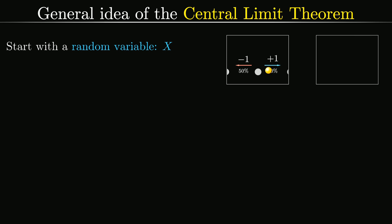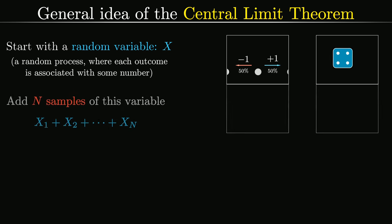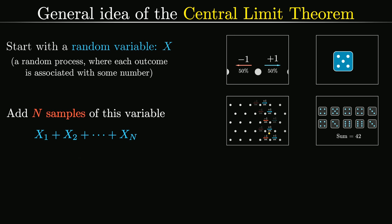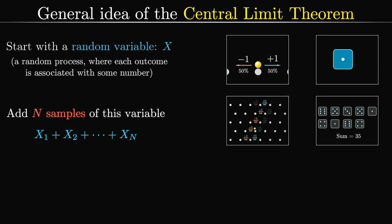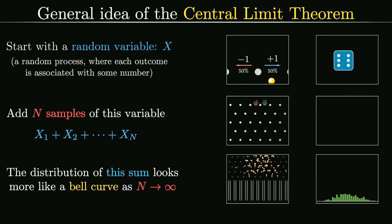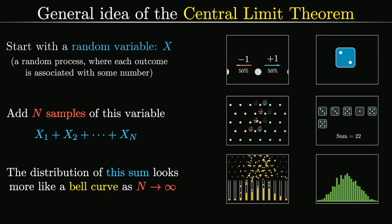The setup is that we have a random variable — basically shorthand for a random process where each outcome is associated with some number, which we call x. For example, each bounce off the peg is modeled with two outcomes associated with the numbers negative one and positive one. Another example would be rolling a die, where you have six different outcomes, each one associated with a number. What we're doing is taking multiple different samples of that variable and adding them all together. The claim of the central limit theorem is that as you let the size of that sum get bigger and bigger, the distribution of that sum will look more and more like a bell curve.